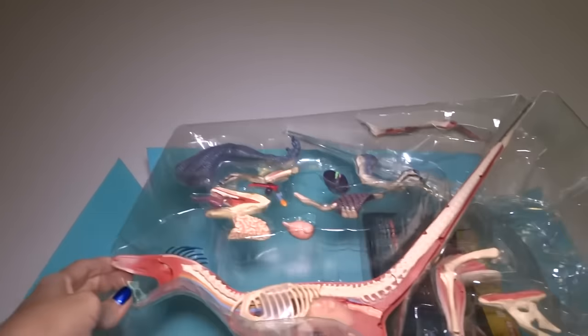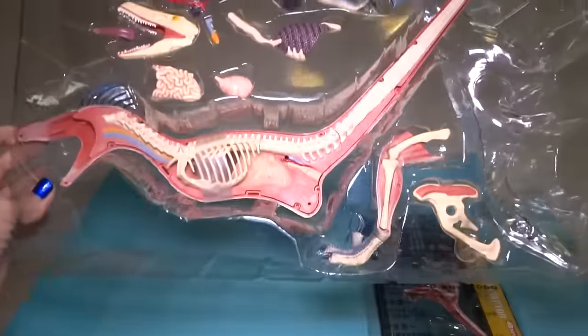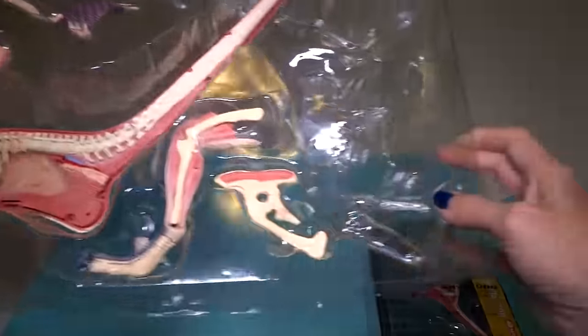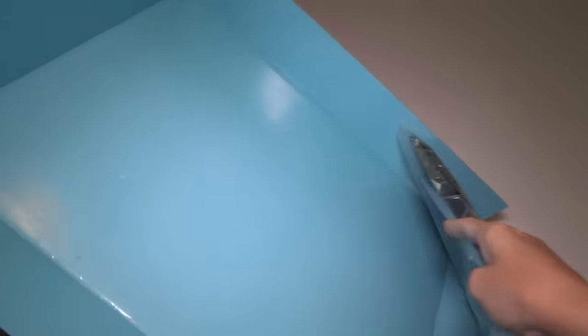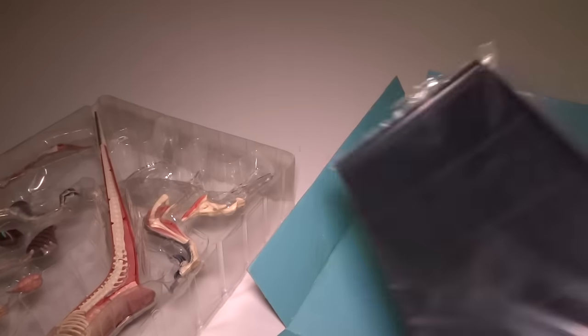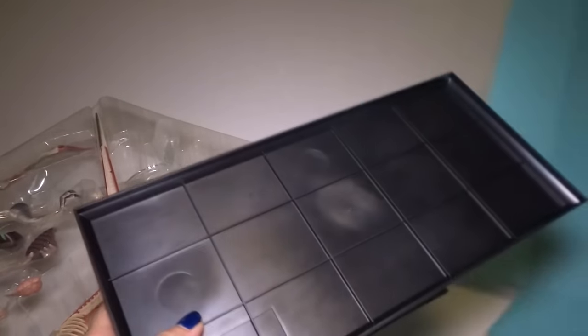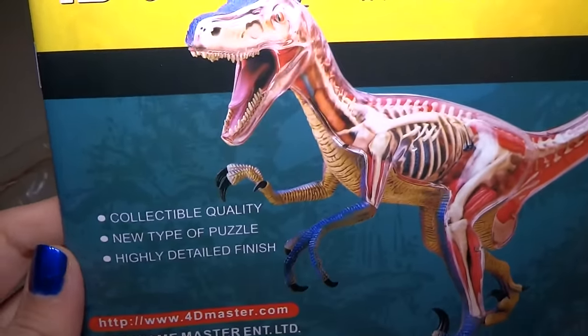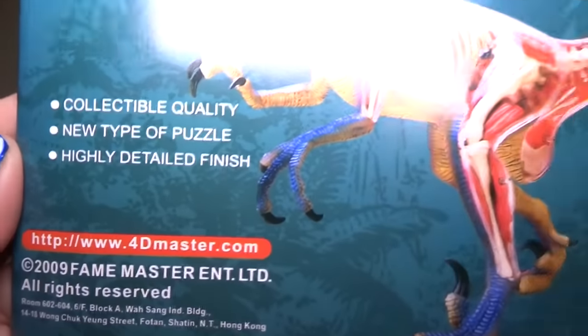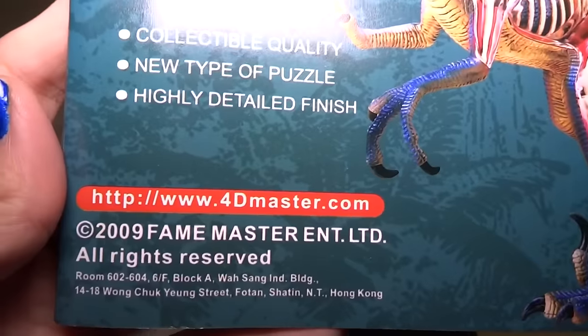And we have this tray with all the pieces on it. And we also have, it looks like a base. It's taped to the inside. Let me get that untaped. Oh, there's an instruction booklet. Velociraptor. Collectible quality. So there's a website you can go to.